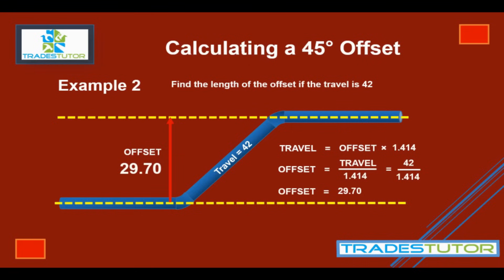And there you have it, calculating a 45-degree offset, either finding the offset, finding the travel, and we could even plug the advance in and do that. The key thing here is the 1.414. If you can remember that, you've got this. Thanks for watching, everyone. Hope you have a great day. And hopefully, you will check out some of the other videos on TradesTutor, maybe even subscribe. That would be awesome. And take care.